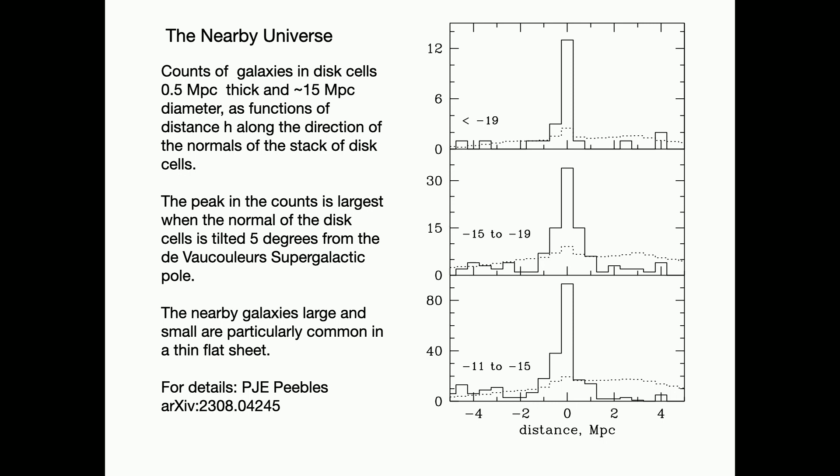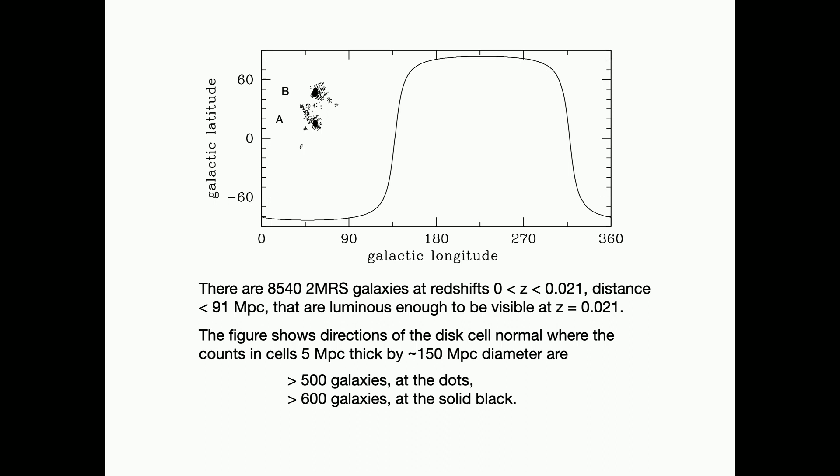A plane that is some five degrees off the plane de Vaucouleur defined back in the 1950s. A spectacular accomplishment with the data he had to get the plane so close to right. But there it is. Galaxies large and small like to be in this plane. That's nearby, relatively speaking, but it is a remarkably tight plane. A challenge for those of you who love to do numerical simulations, make a simulation of the galaxy distribution predicted in the standard theory and apply this test. Would you get such thin distributions often? Well, we'd love to know.